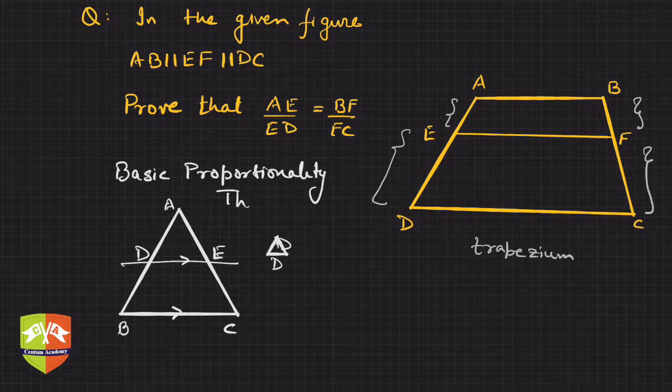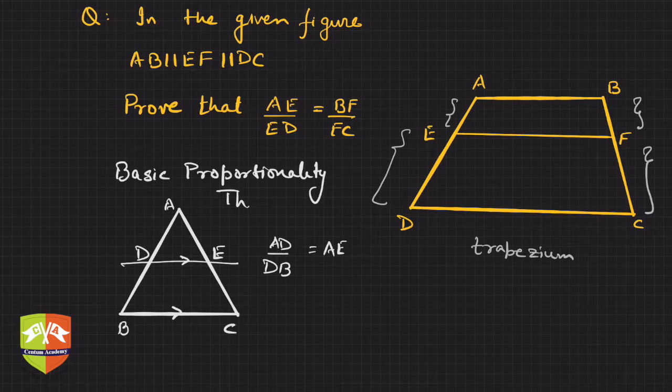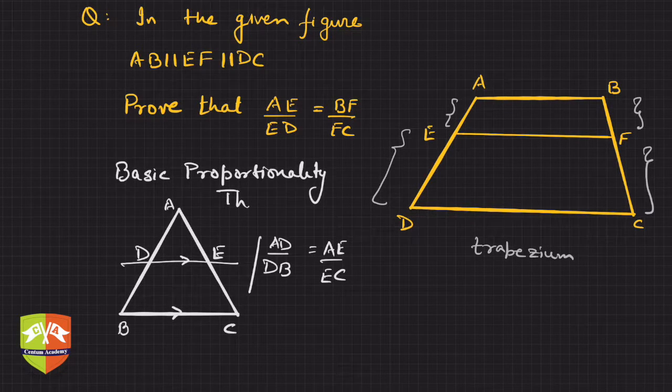So you know if DE is parallel to BC, then AD upon DB is equal to AE upon EC. This is what we have learned about the Basic Proportionality Theorem.